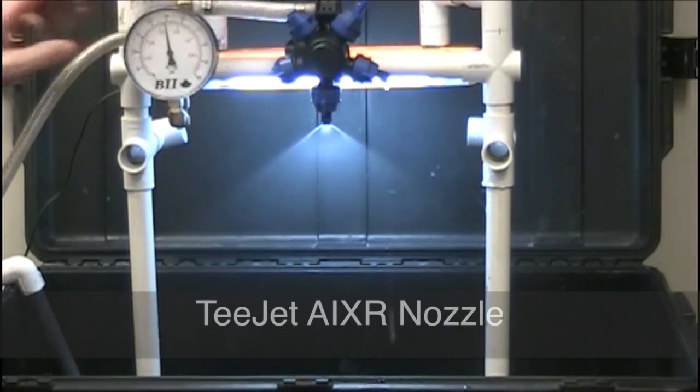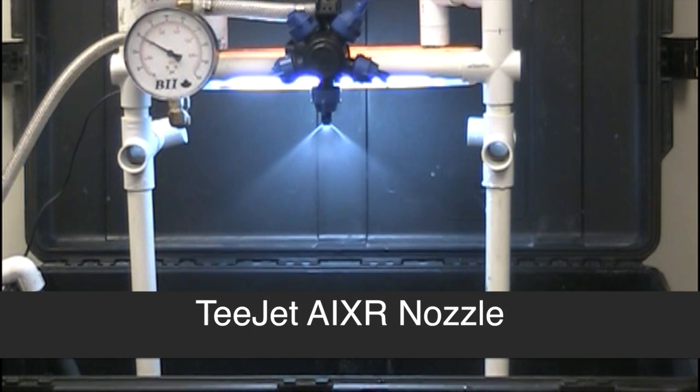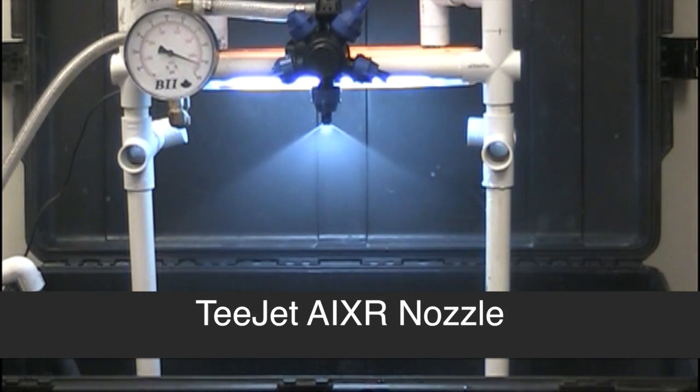The T-Jet AI-XR, again, very much like the others. Lowest pressure probably about 30 PSI. Highest pressure depends on how drift-tolerant you are.